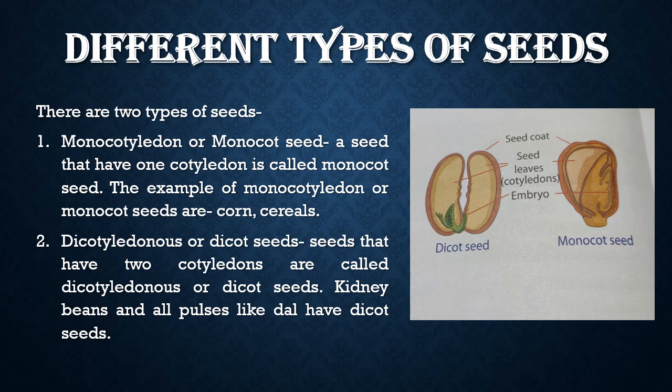Number two: dicotyledonous or dicot seeds. Seeds that have two cotyledons are called dicotyledon or dicot seeds. Kidney beans and all pulses have dicot seeds. My dear students, turn your book to page 54 and you will see the diagram for your better understanding.